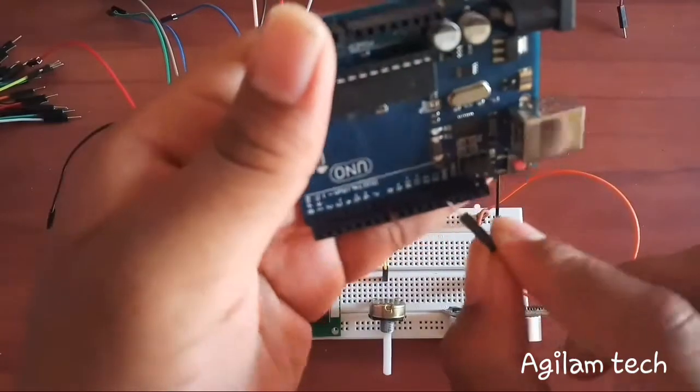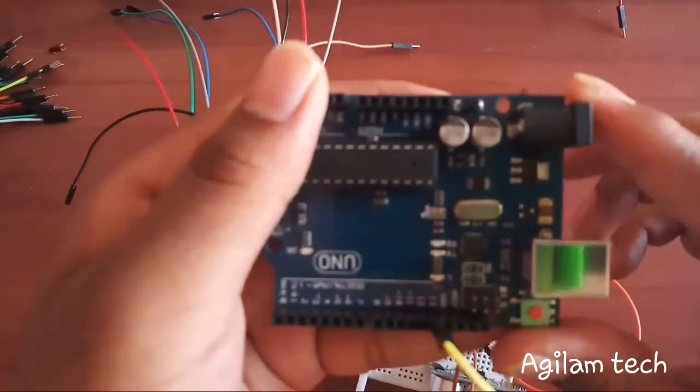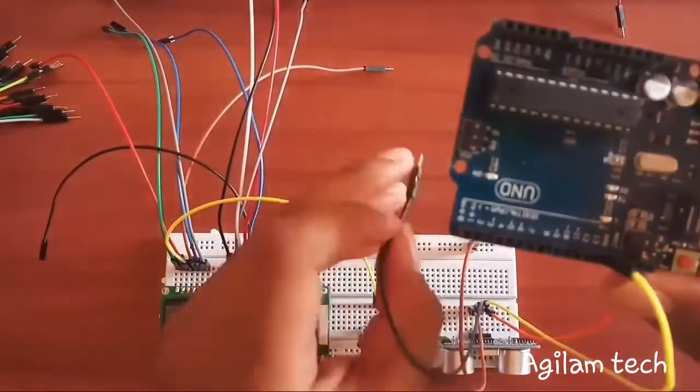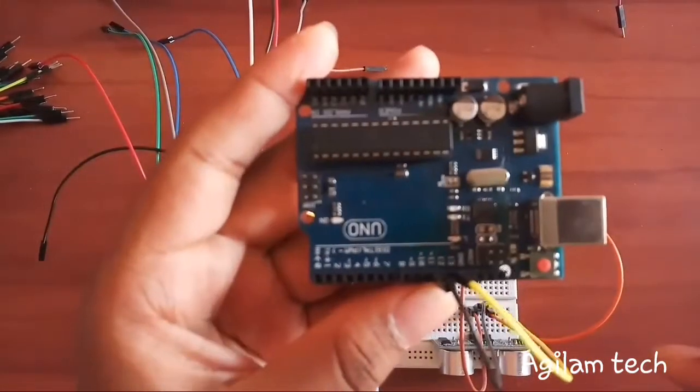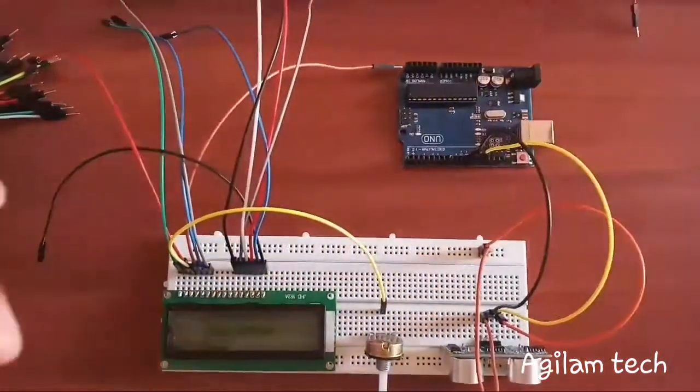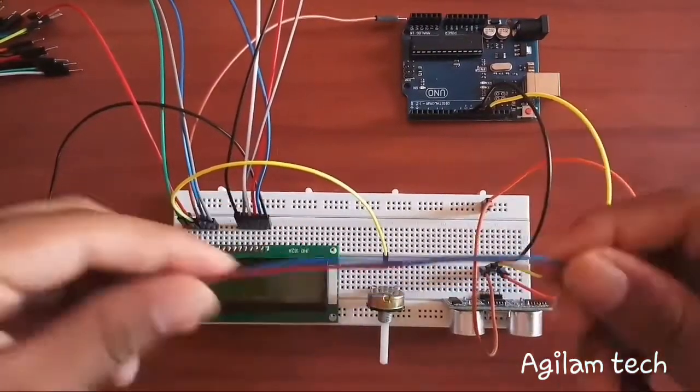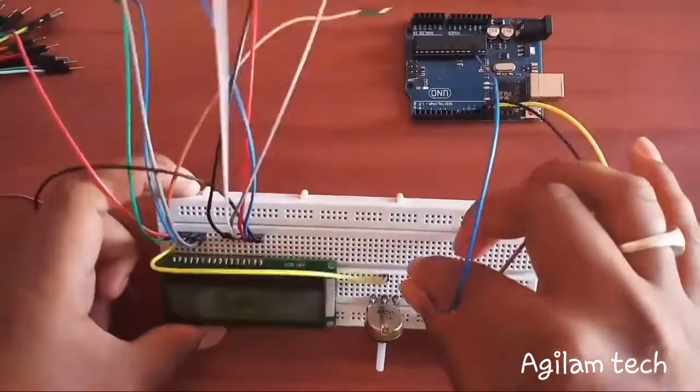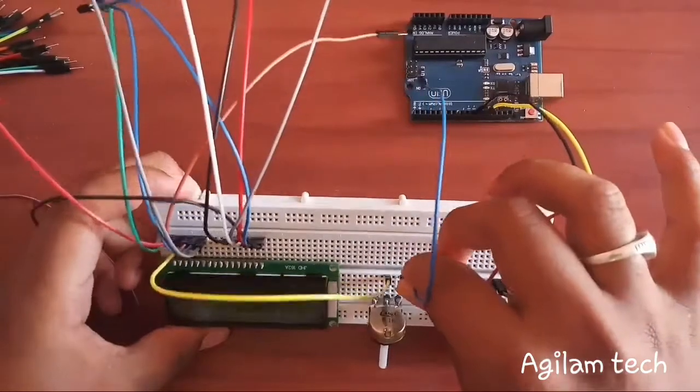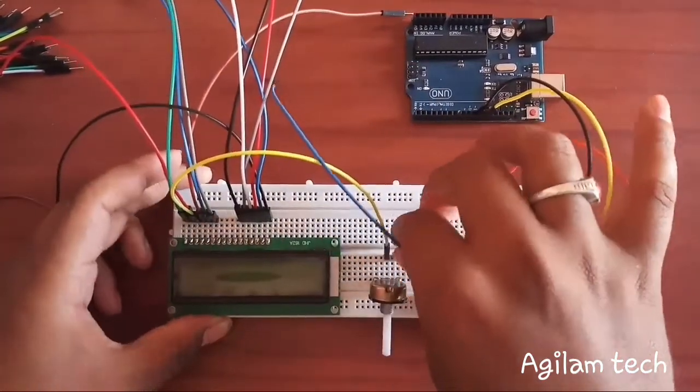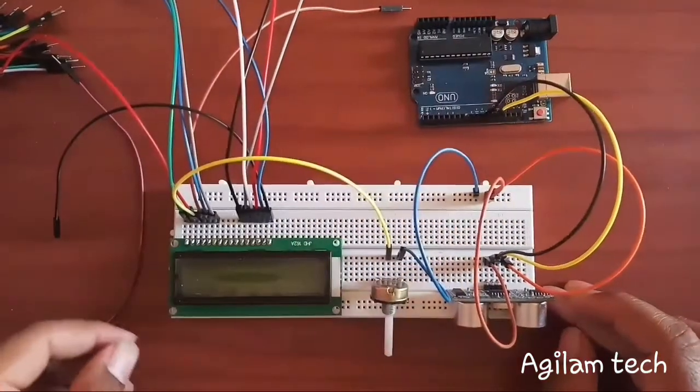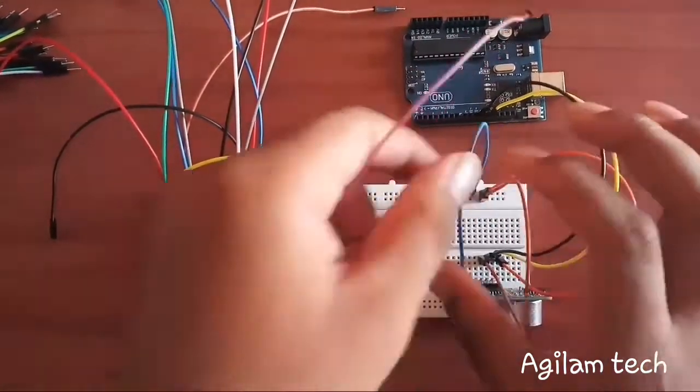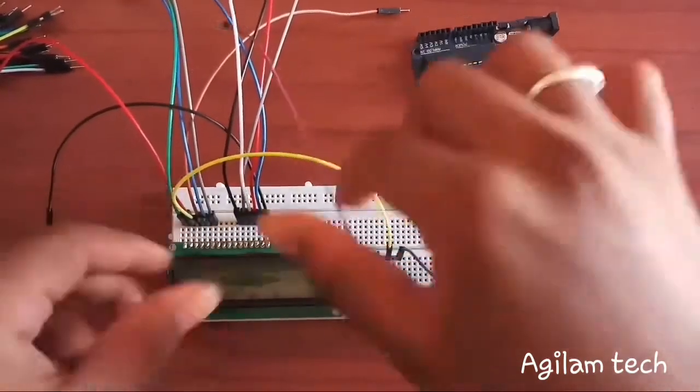I am connecting echo to pin number eleven and trigger to pin number thirteen, okay all set. Now I am connecting the right side end of variable resistance to ground, and left side end I am going to connect for plus 5 volt.